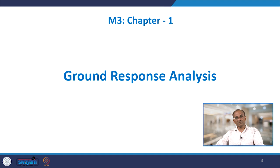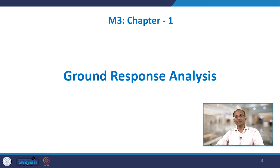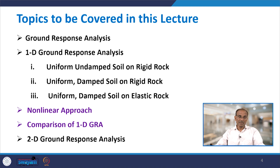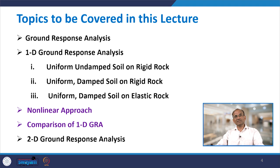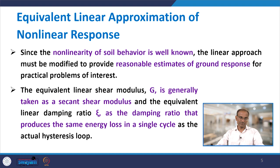In the earlier two lectures, we talked particularly about transfer functions — first for undamped soil on rigid rock, then damped soil on rigid rock, and damped soil on elastic rock. Today we are going to talk about two topics: one is what we call the non-linear approach, and the other is comparison of 1DGRA — specifically comparison between equivalent linear and non-linear approaches.